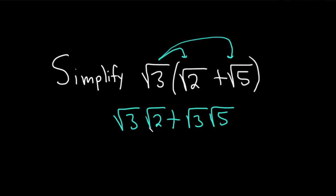And now you can multiply the numbers that are inside the square roots. So 3 times 2 is 6, so this will be the square root of 6, plus and then 3 times 5 is 15. So this is the square root of 15.